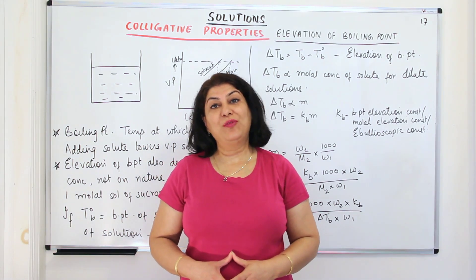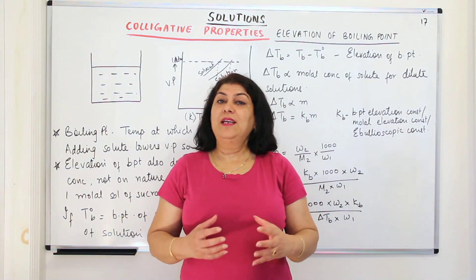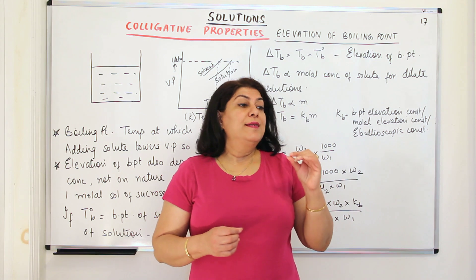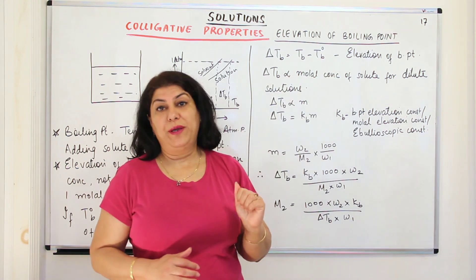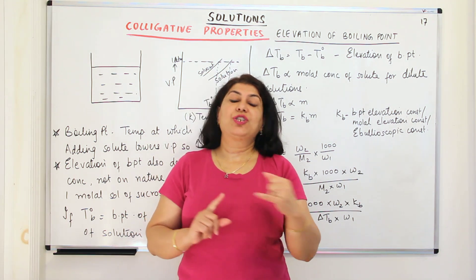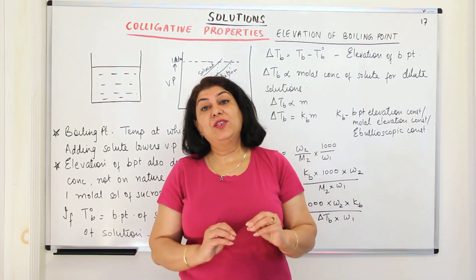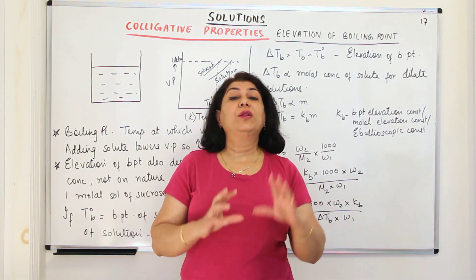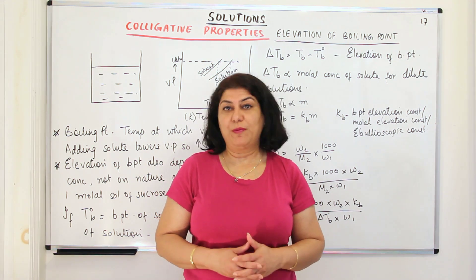I am Seema and welcome to part 17 of the chapter Solutions. We were discussing colligative properties and in the previous couple of videos I was telling you about the relative lowering of vapor pressure. A colligative property is a property of a solution which depends on the quantity of solute that has been added to it. It does not depend on the nature of the solute added to it, and the first example we studied was the relative lowering of vapor pressure.